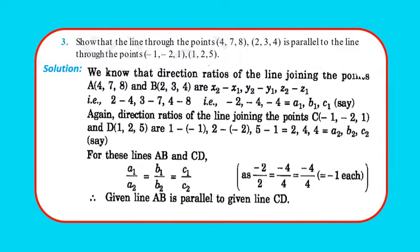Question 3: Show that the line through points (4, 7, 8) and (2, 3, 4) is parallel to the line through points (−1, −2, 1) and (1, 2, 5). Direction ratios of AB: (2−4, 3−7, 4−8) = (−2, −4, −4), giving a₁, b₁, c₁. Direction ratios of CD: (1−(−1), 2−(−2), 5−1) = (2, 4, 4), giving a₂, b₂, c₂. For parallel lines, a₁/a₂ = b₁/b₂ = c₁/c₂: we get −2/2 = −4/4 = −4/4 = −1. Since the ratios are equal, AB is parallel to CD.